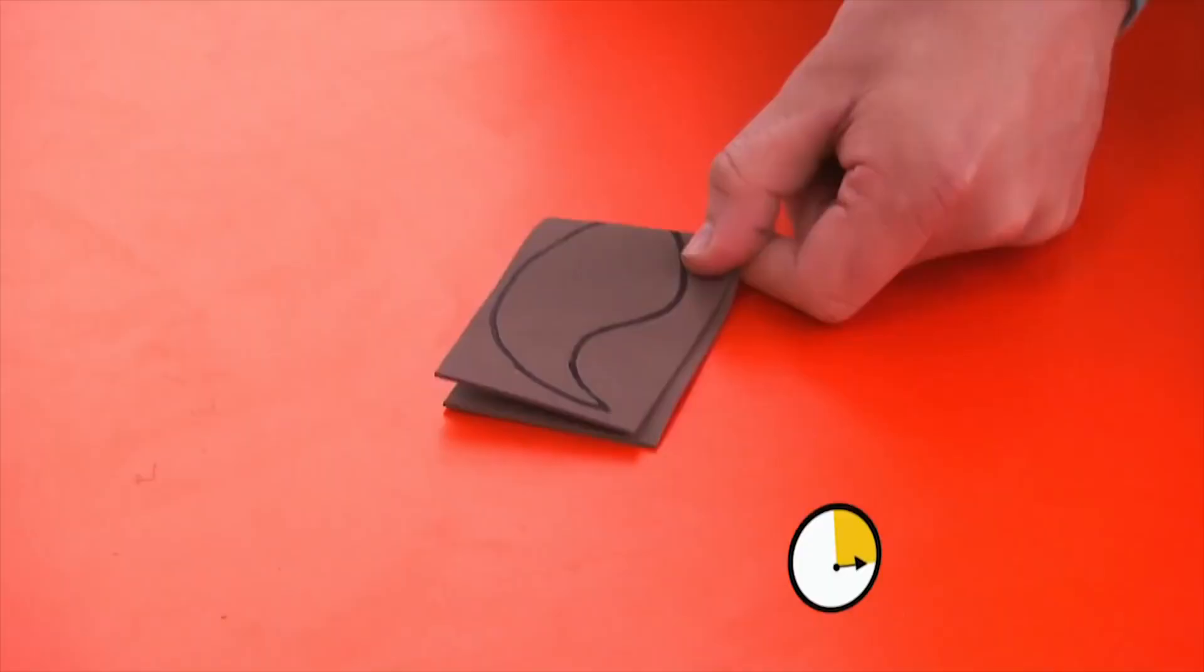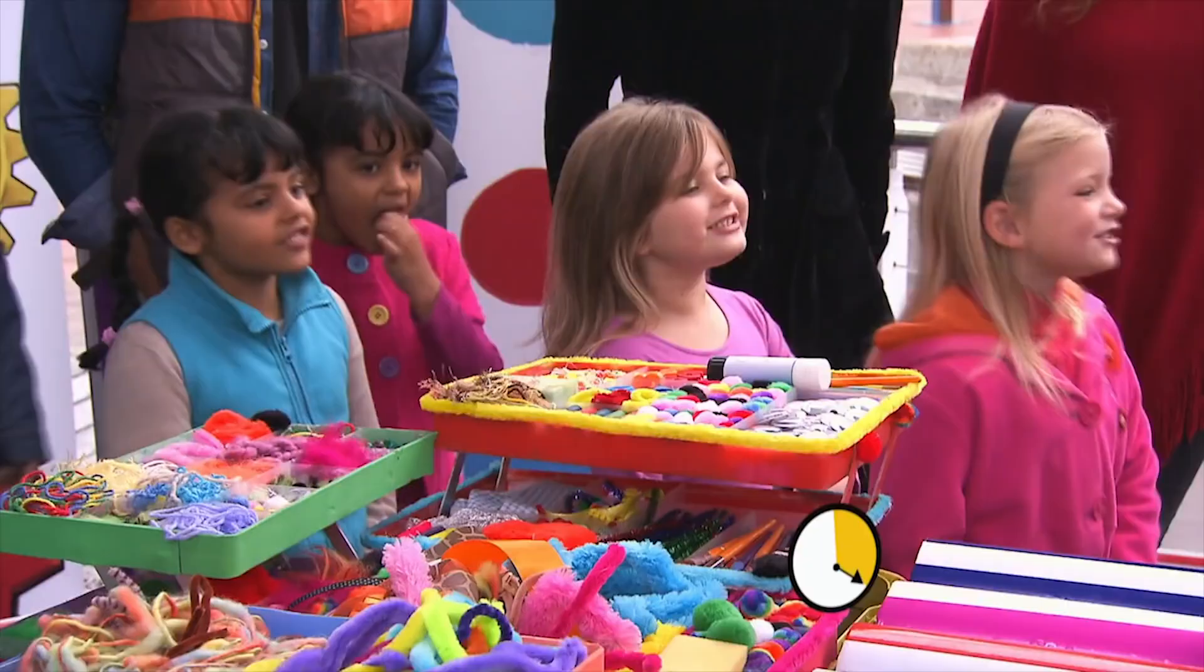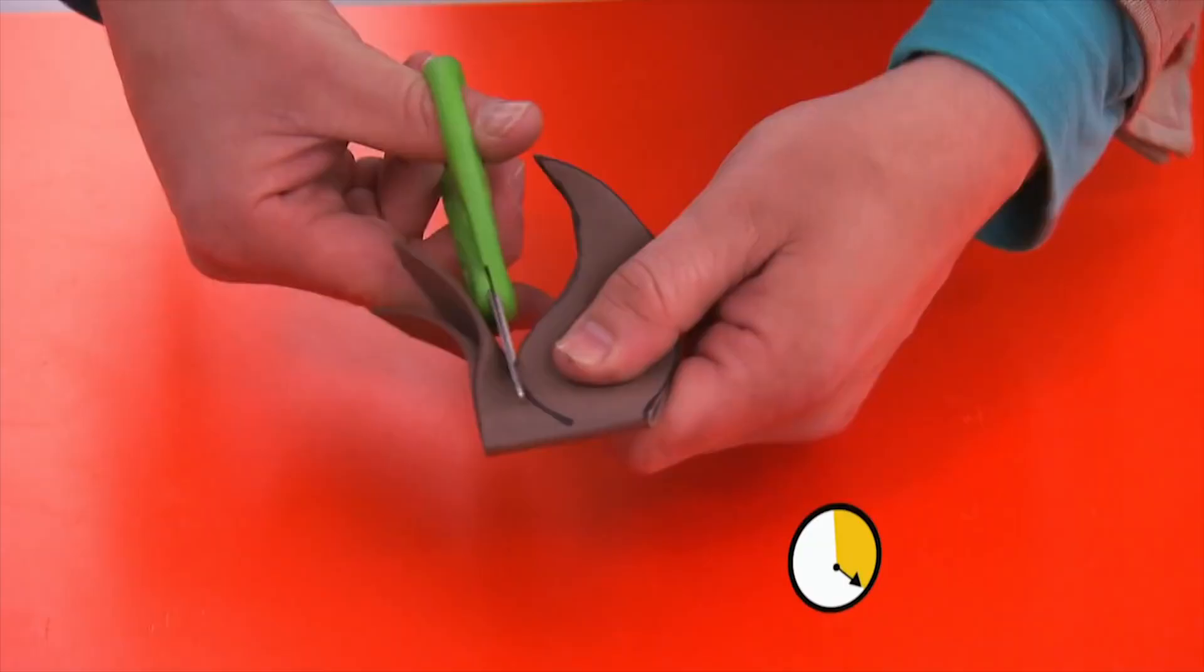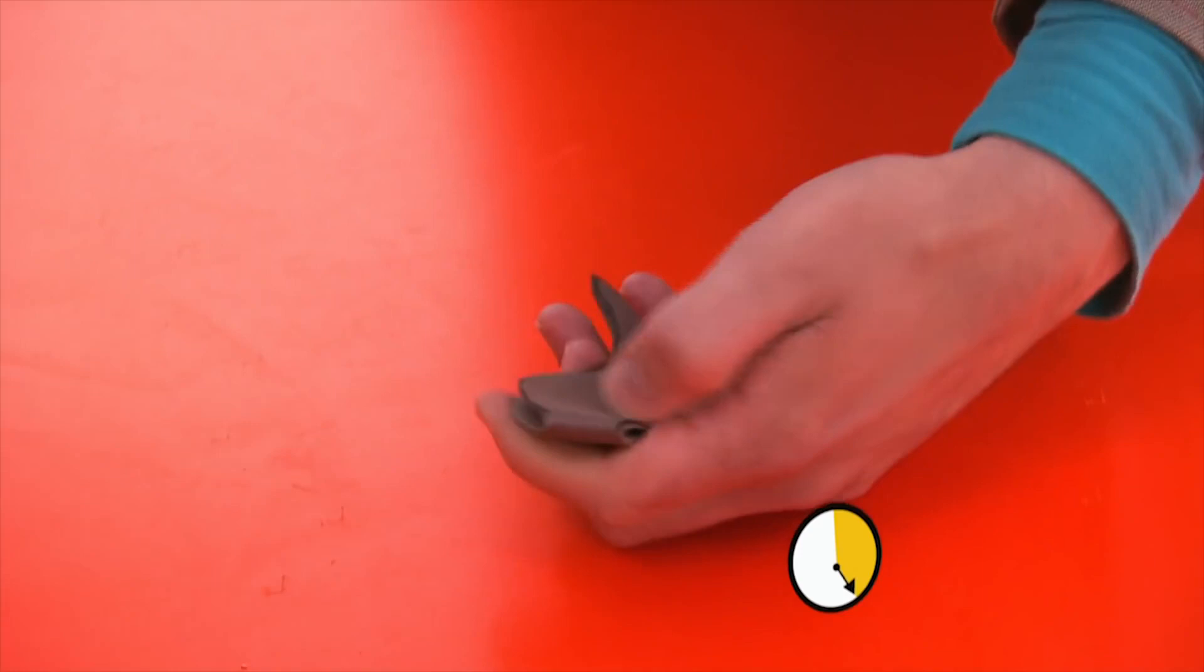But we need to be very careful because scissors are sharp! That's right. When we open up this teardrop shape, it should look like the shape of a moustache.